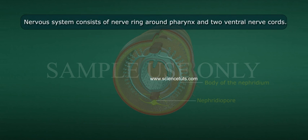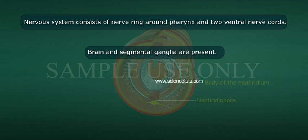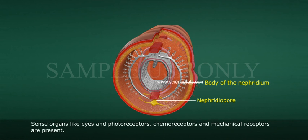The nervous system consists of a nerve ring around the pharynx and two ventral nerve cords. Brain and segmental ganglia are present. Sense organs such as eyes, photoreceptors, chemoreceptors, and mechanoreceptors are present.